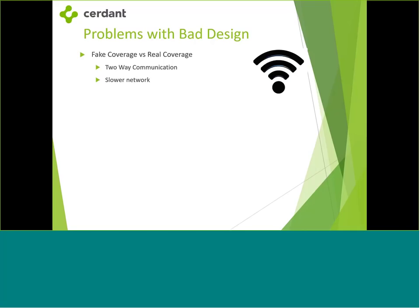Fake coverage kills two-way communication, slows down that user, and can slow down the entire network. If enough people are connected to an access point and one or more users encounter that fake signal, they become a hidden node — a user who thinks they have good signal but whose return traffic can't make it back. Wireless access points are more like a hub than a managed switch, so everyone takes a turn. If someone's taking a long time due to poor return signal, everybody else on that access point is waiting for their turn — like a self-checkout line where someone brings more than 10 items.